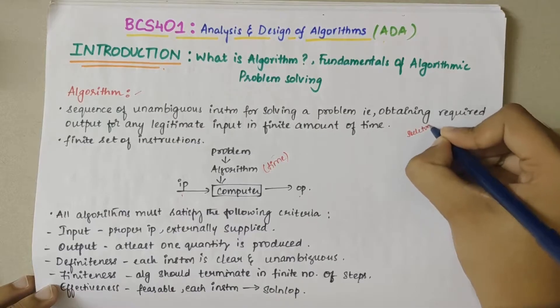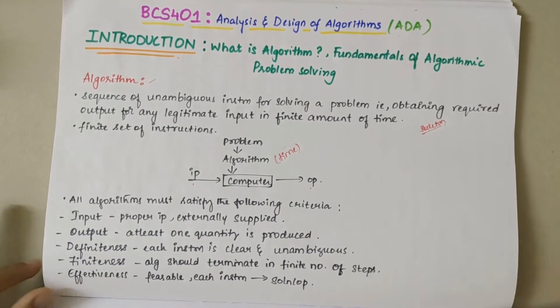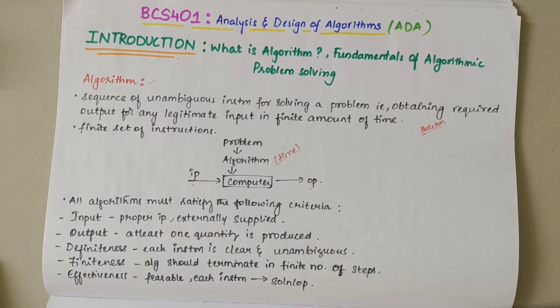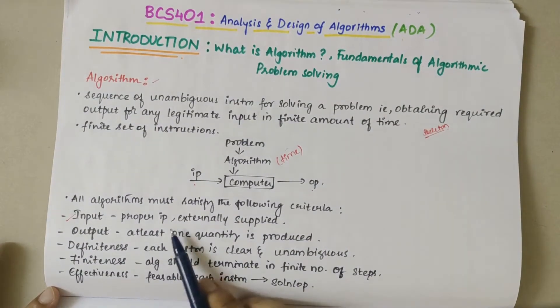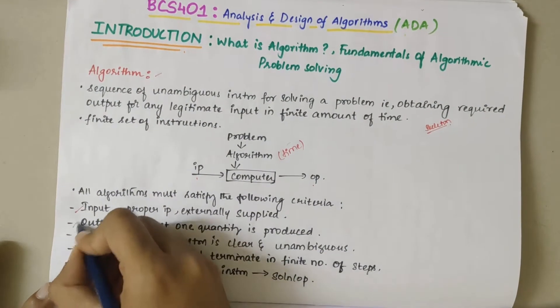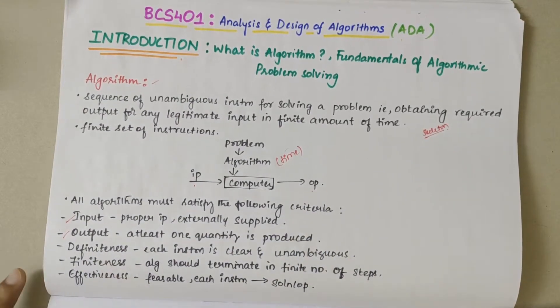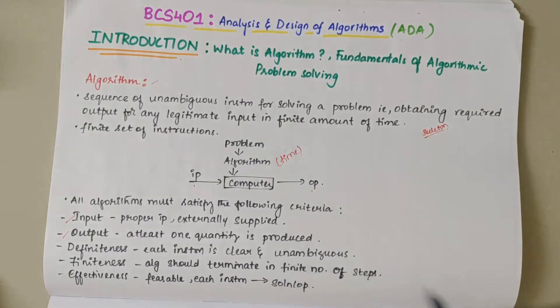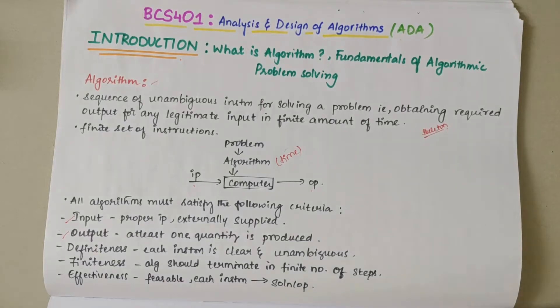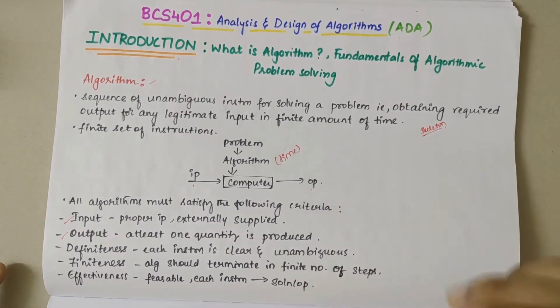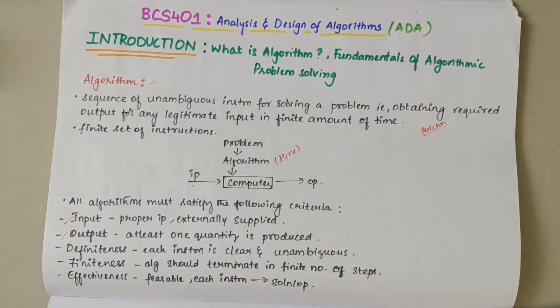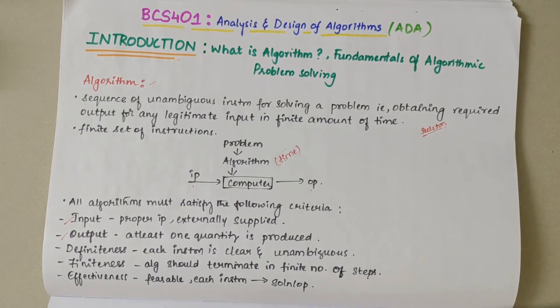All algorithms must satisfy the following criteria: it should have a legitimate input, proper input externally supplied. It should have an output, that is at least one quantity is produced. Then it should be definite - each instruction should be clear and unambiguous. Then we have finiteness - the algorithm should terminate in a finite number of steps. And then we have effectiveness - the algorithm should be feasible and each instruction should direct to the solution or output.